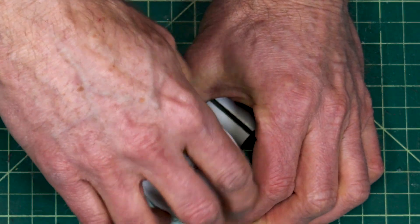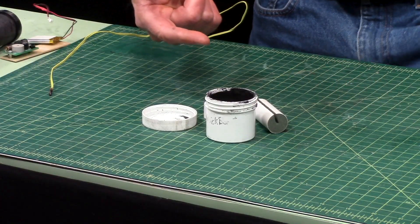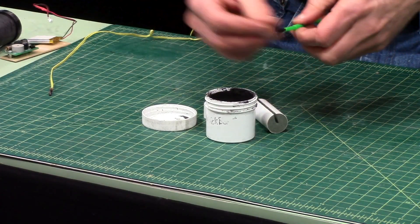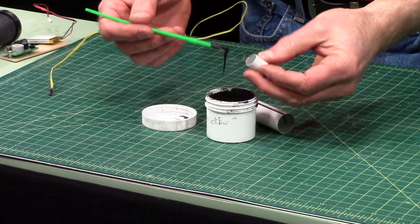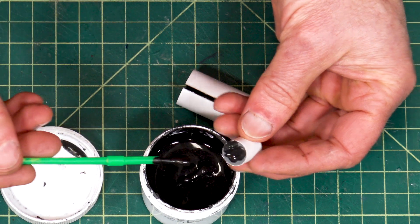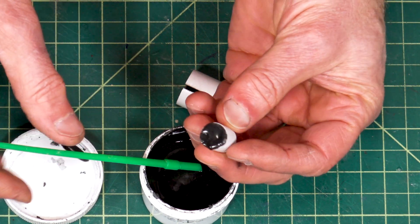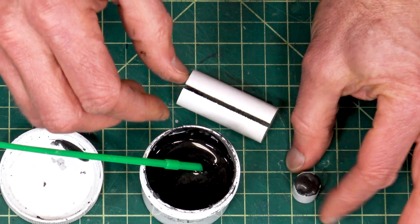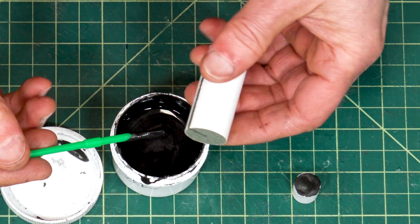This stuff is a liquid and normally you can use this to make your own igniters but what you can do is you can take a paintbrush and you can paint the back end of the delay just slather it on there pretty good and then just let it dry overnight and you can also paint the very topmost part of the propellant grain.